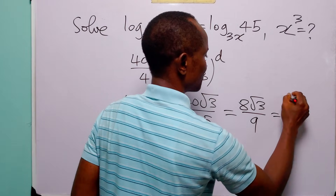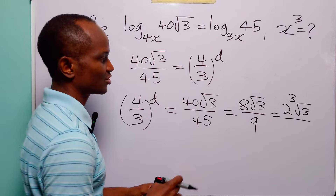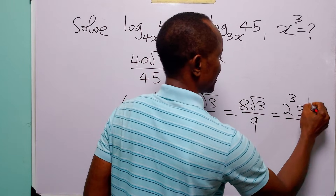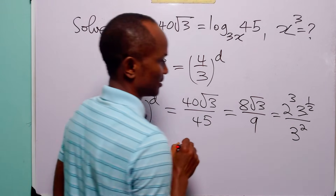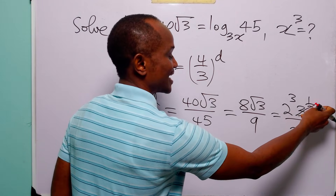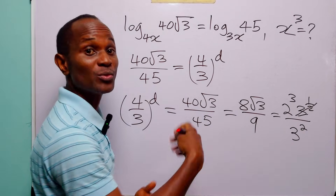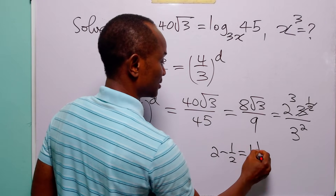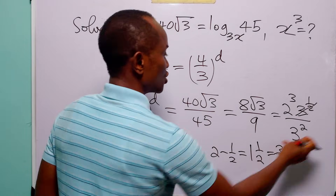Now, 8 is 2 cubed, so this is 2³ multiplied by 3^(1/2), all divided by 9. And 9 is 3². We cancel 3^(1/2) from the numerator against 3² in the denominator by subtracting exponents: 2 minus 1/2, which equals 3/2. So the equation becomes (4/3)^d = 2³ divided by 3^(3/2).